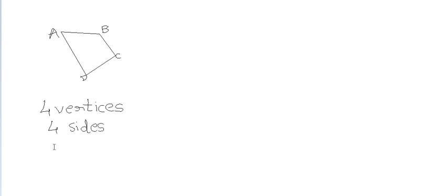A quadrilateral also has 4 angles. By 4 angles we generally mean the internal angles. So in this quadrilateral the 4 angles are angle A, angle B, angle C, and angle D.